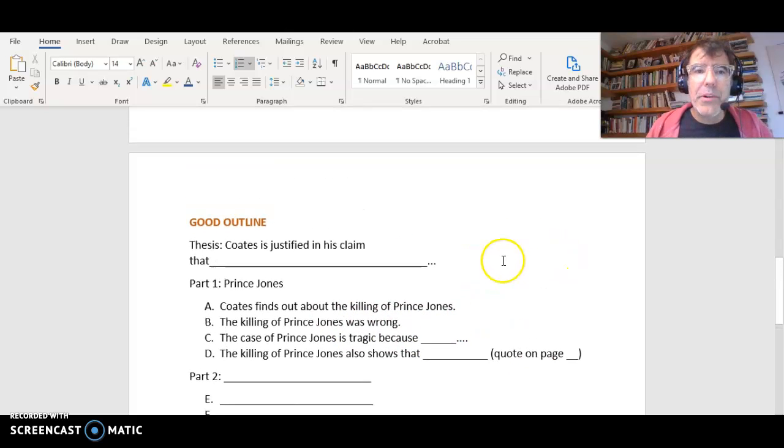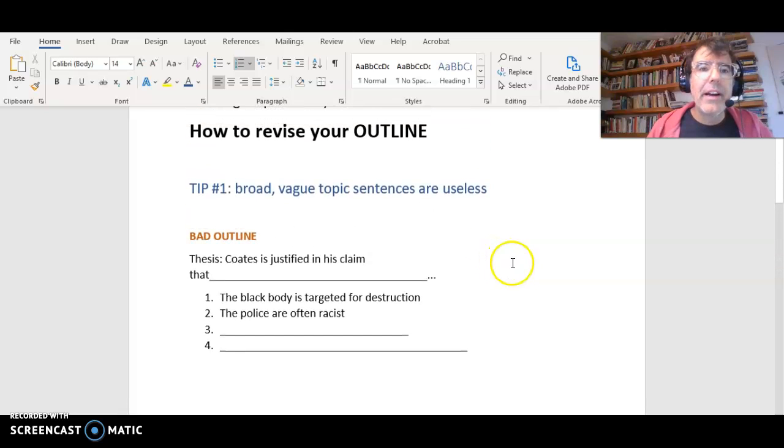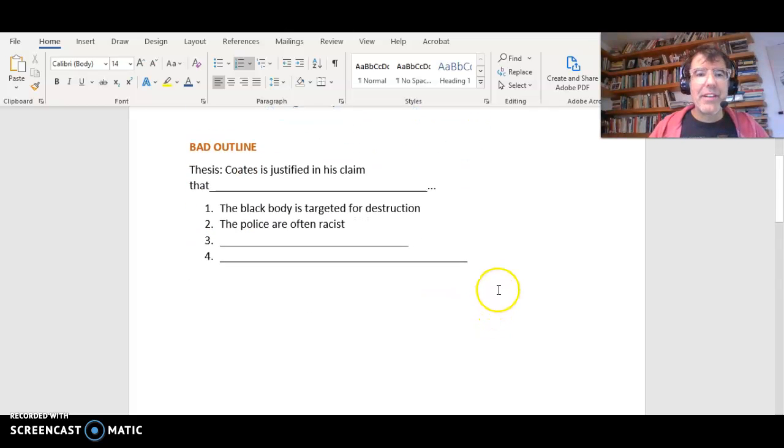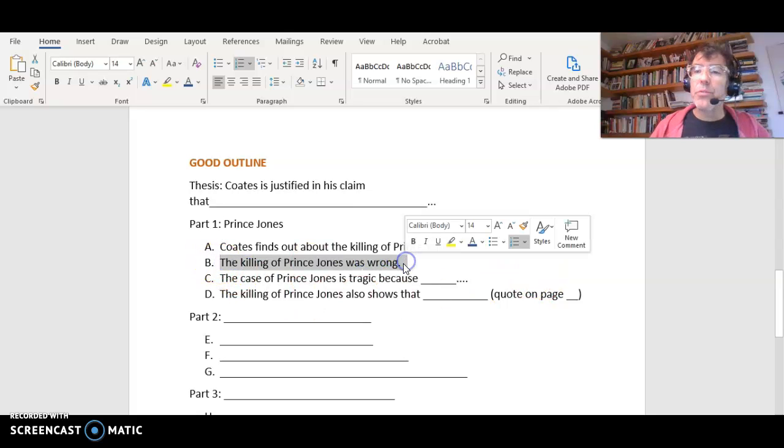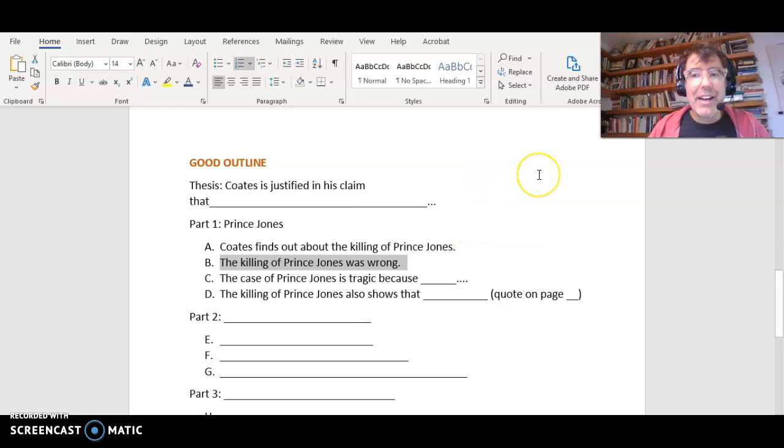To summarize, tip number one: no broad, vague topic sentences that you haven't organized yet. 'The police are often racist' - that's too big. That's not gonna be one paragraph. But you could have one paragraph arguing that the killing of Prince Jones was wrong. That fits into your overall picture, but it's more specific. That's what good outlining does - you're choosing a specific thing for each paragraph. This is a lot of work, but your essay will be great if you do this.